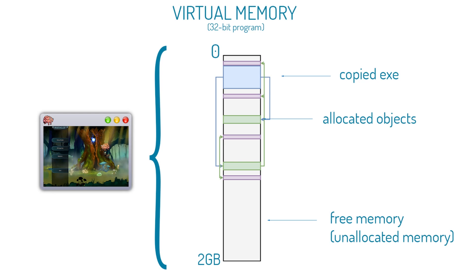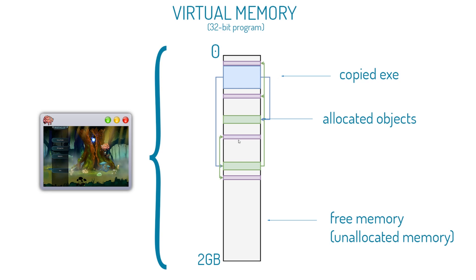This is often why cheats stop working. This is address 0 up here and address 2 billion give or take down here. The player X and Y might be in this purple section, and if every time the game runs it's going to be at a different address, that means the address you found in Squally or Cheat Engine is not going to be valid anymore. The only section that is reliable is this blue section here where the EXE was originally copied over. Any hacks you develop using information in the blue section will continue to work every time the game runs. This information is known as static — its position never changes. Everything else is dynamic; their positions can change.